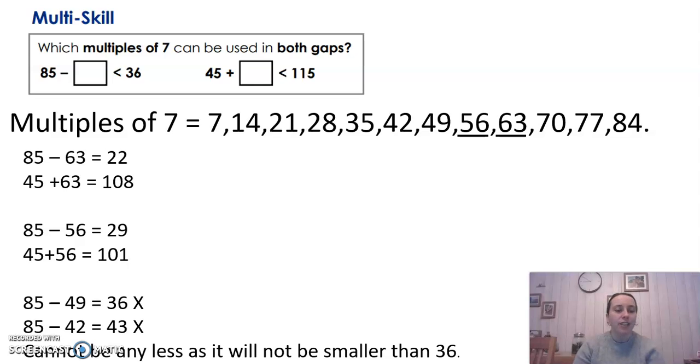85 take away 56 is 29. 29 is less than 36. And then 45 add 56 is 101. 101 is less than 115. So yay, it worked.